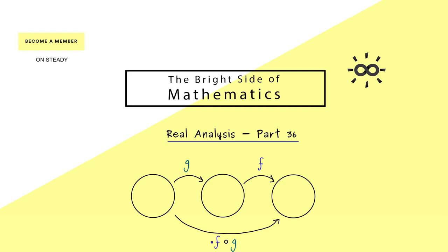The notation we use for that is f circle g. By definition this means when we put in a point x into this function, then we have to put the point g(x) into the function f.